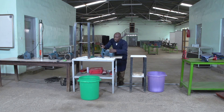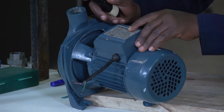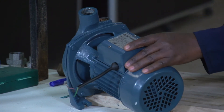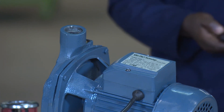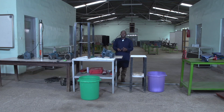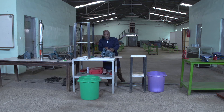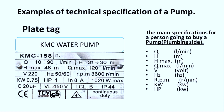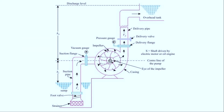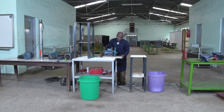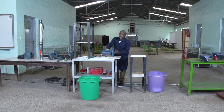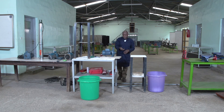The main specifications you can see when you are going to procure the pump are the flow rate, Q max, Q minimum, and also the rotation per minute. Also when you go to the installation, you look at where the inlet is and also the outlet. When you go to the installation, we see the suction side and the delivery side.